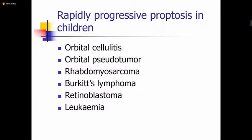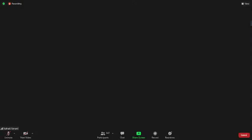In summary, please remember the causes of rapidly progressive proptosis in a child, as these are life-threatening conditions. They include orbital cellulitis, orbital pseudotumor, rhabdomyosarcoma, Burkitt's lymphoma, retinoblastoma, and leukemia. That is the end of the first part of the lecture. We will now go to the second part — retinoblastoma.